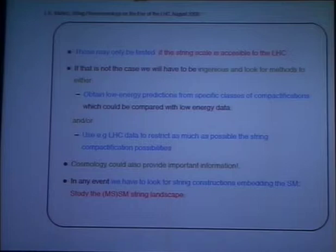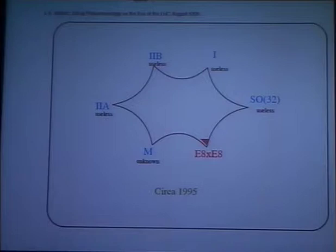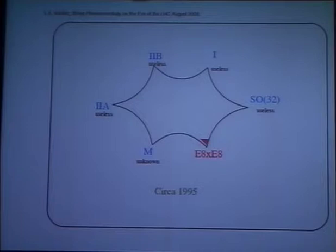In any event, it is clear that we have to look for string constructions that embed standard models. So, we study the standard model or the MSSM string landscape. This was the status of this landscape before 1995. What we first attempted was studying the heterotic E8×E8 string and compactifying down to four dimensions. Type IIA, type IIB, type I, and SO(32) were considered as useless from this point of view, and 11-dimensional supergravity was essentially ignored.